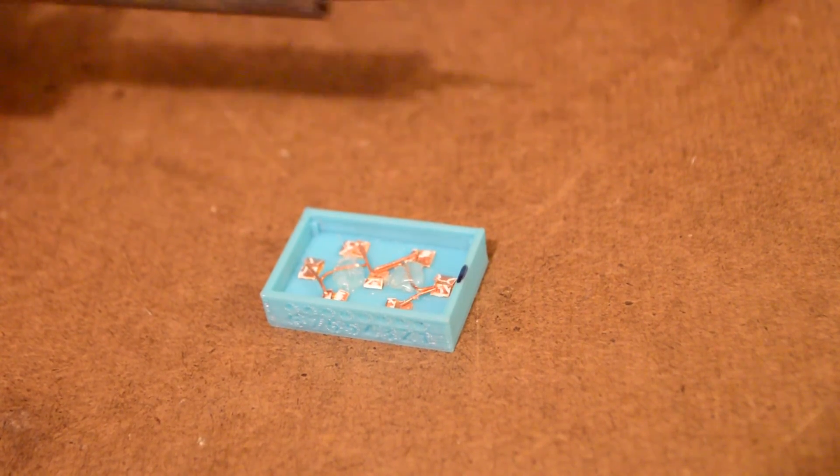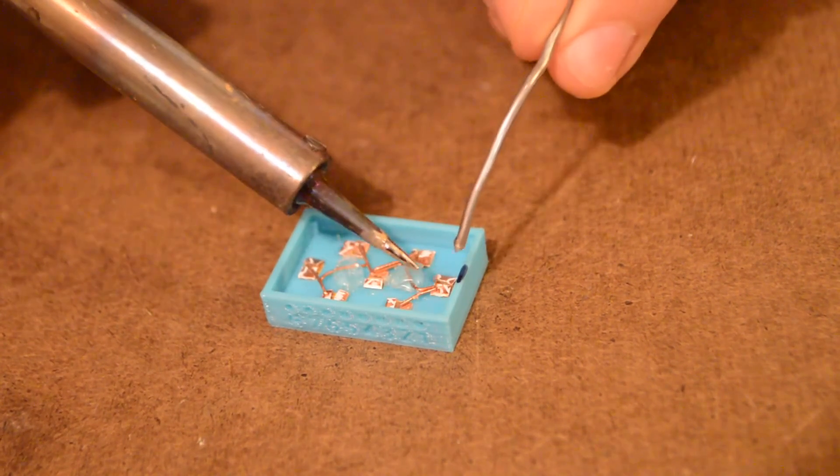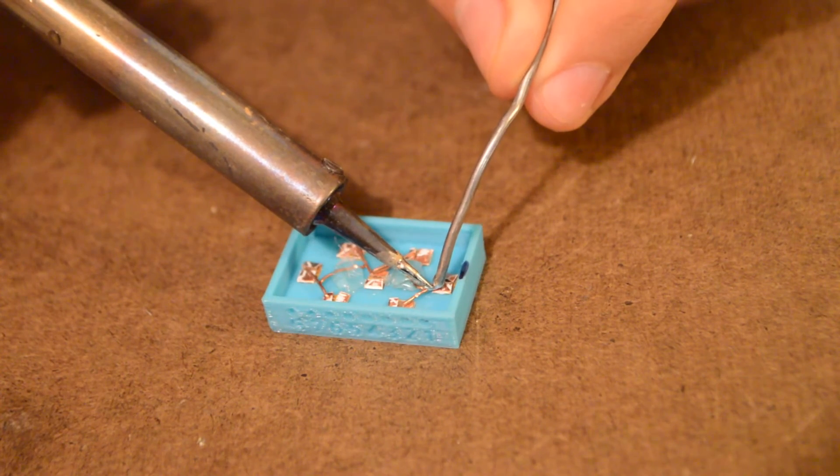Carefully solder the copper wire to each of the LEDs. Make sure not to bridge across to the other lead.